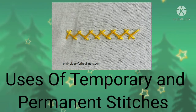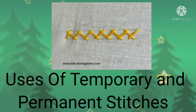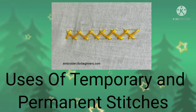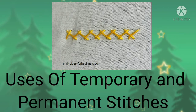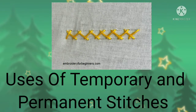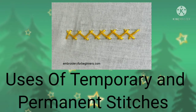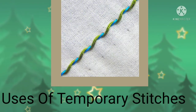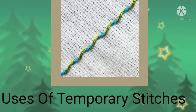Let me quickly refresh your memory on what temporary and permanent stitches are. In the last lesson, we said that temporary stitches are used to hold pieces of cloth in position while permanent stitches are being made. The permanent stitches are left on the articles after work is completed. Permanent stitches are the major stitches used in construction.